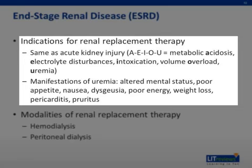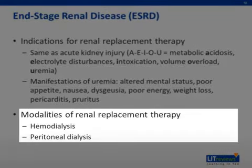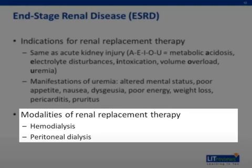Often the most subtle or variable indication for renal replacement therapy is uremia. Uremia may manifest as altered mental status, poor appetite, nausea, dysgeusia, poor energy, weight loss, pericarditis, and/or pruritus. It is important to monitor for these symptoms as renal function declines. Once a decision is made to initiate renal replacement therapy, the two modalities are hemodialysis and peritoneal dialysis. Renal transplantation is also considered to be renal replacement therapy, though patients are usually simultaneously evaluated for dialysis options as they approach candidacy for transplantation.